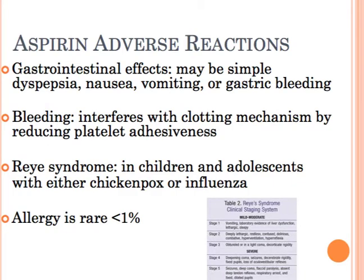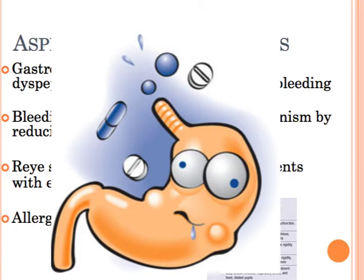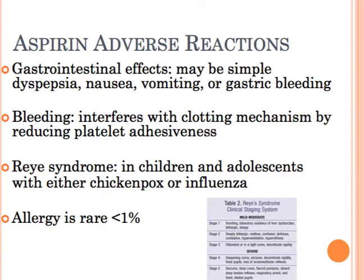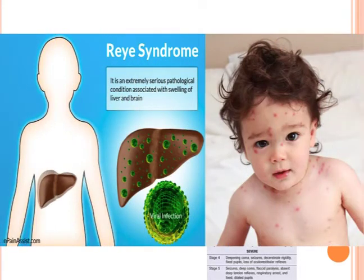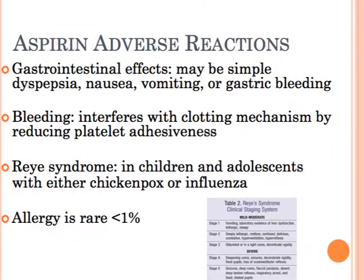Aspirin's most frequent side effects are stomach upset, nausea, vomiting, and even a gastric bleed. At usual therapeutic doses, aspirin irreversibly interferes with clotting by reducing the platelet's stickiness. The time it takes to form a clot is prolonged, and each platelet is affected until a new platelet is formed — about four to seven days. In children with either chickenpox or flu, aspirin is associated with Reye's syndrome, which comes with liver and brain toxicity and could be fatal, so we don't usually recommend aspirin use in children.